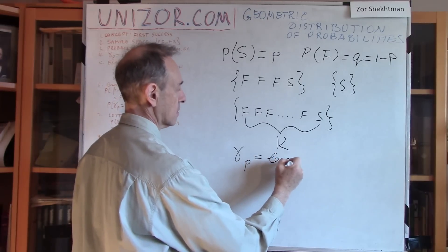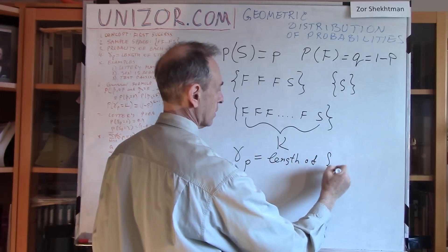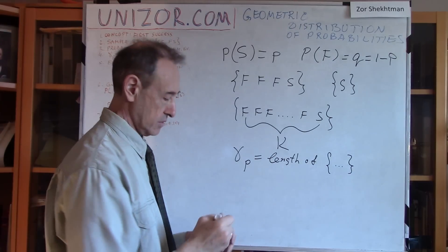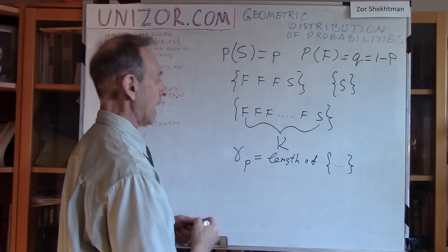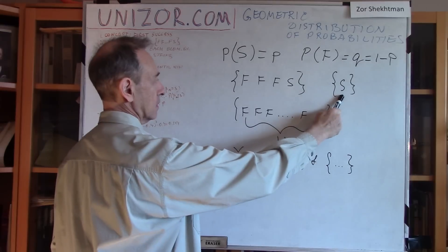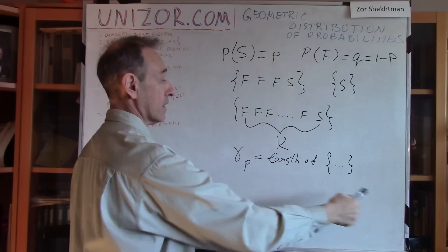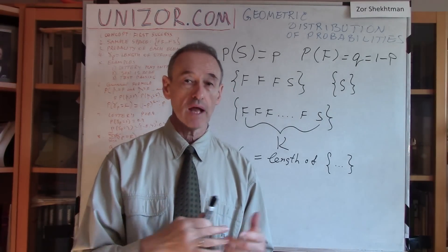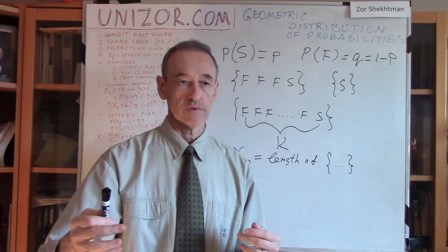which is equal to the length of a string which we are talking about. So this is a random variable. It can have values of 1 if success comes from the first place, or any other integer number. Basically, it can have the value of any integer number. There is no upper boundary of this.